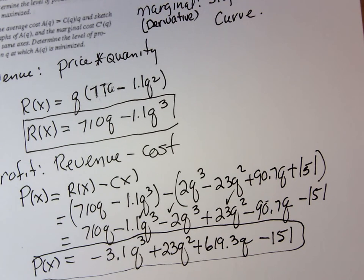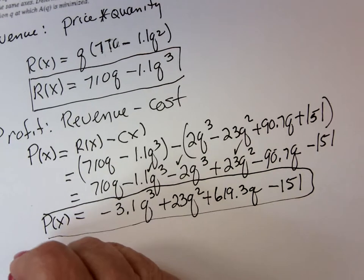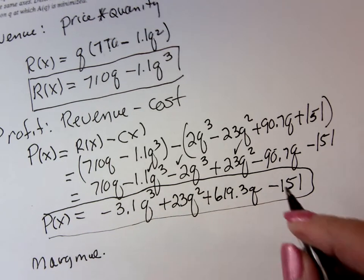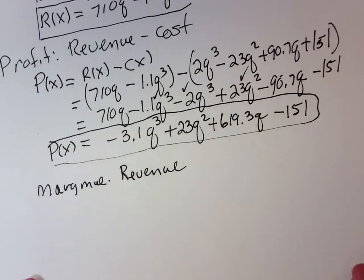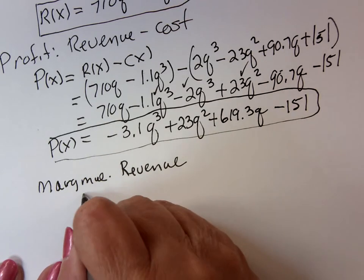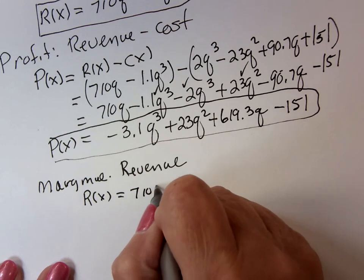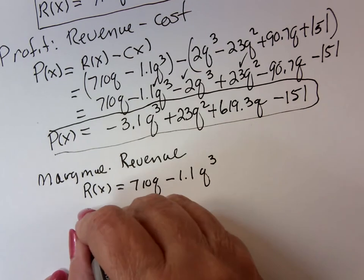So then it says we want to find the marginal revenue, and notice it says R(Q), and the marginal cost, C(Q). We're not going to sketch them. So if I'm going to find the marginal revenue, marginal revenue is I take the revenue curve, and it's R'(X). And that's just 710 minus 3.3Q².